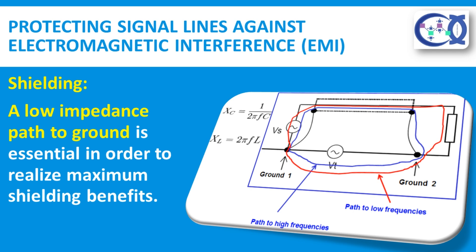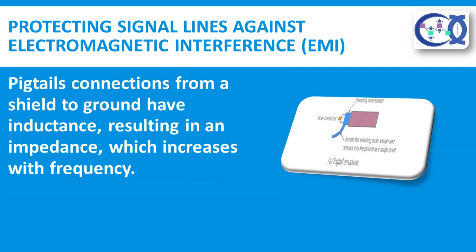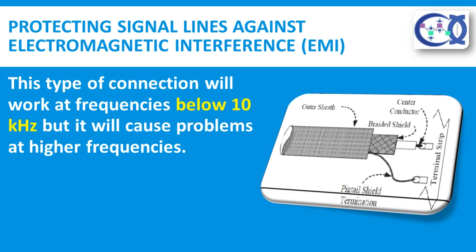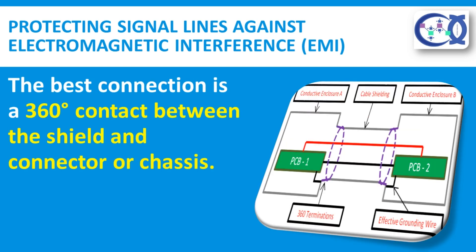Now we will discuss shielding. Many potentially effective shields can be destroyed by improper termination of the shields to ground. A low impedance path to ground is essential in order to realize maximum shielding benefits. Pigtail connections from a shield to ground have inductance, resulting in an impedance which increases with frequency. This type of connection will work at frequencies below 10 kHz but will cause problems at higher frequencies. The use of short connections with large cross-sectional area minimizes the inductance of a pigtail, but the best connection is a 360-degree contact between the shield and connector or chassis.